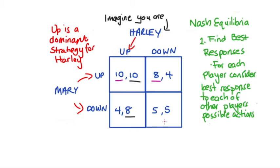So both of our players have dominant strategies here. This is in part so I can show you a dominant strategy equilibrium. If you would like to see examples of games with non-dominant strategies, I have a practice video and I'll link to it in the description below.